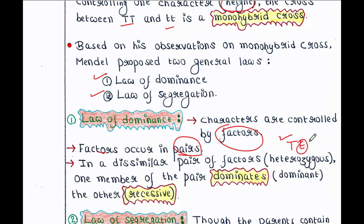Capital T is dominant because when both alleles are present together, capital T suppresses the effect of small t. Small t encodes for dwarfism, but capital T suppresses that effect and promotes the tall phenotype. Hence, we call capital T the dominant allele and small t the recessive allele.